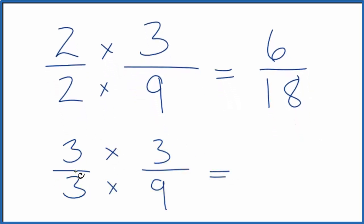So again, 3 divided by 3, that's 1. We're not changing the value. But now, 3 times 3 is 9, and 3 times 9 is 27. Another equivalent fraction to 3/9.